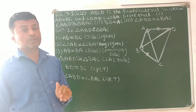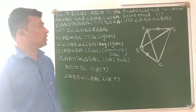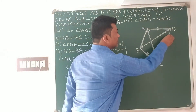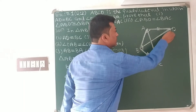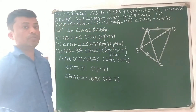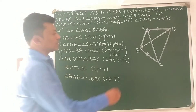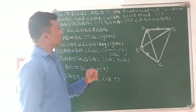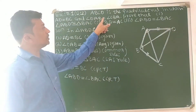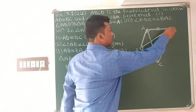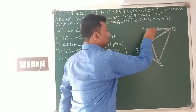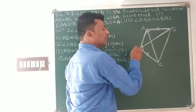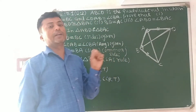In the given question, one quadrilateral ABCD is given to us. What is given to us in the question: AD is equal to BC — this AD is equal to BC. Second, angle DAB is equal to angle CBA. Angle DAB means this angle and angle CBA means this angle. Both these angles are the same — that is given to us.